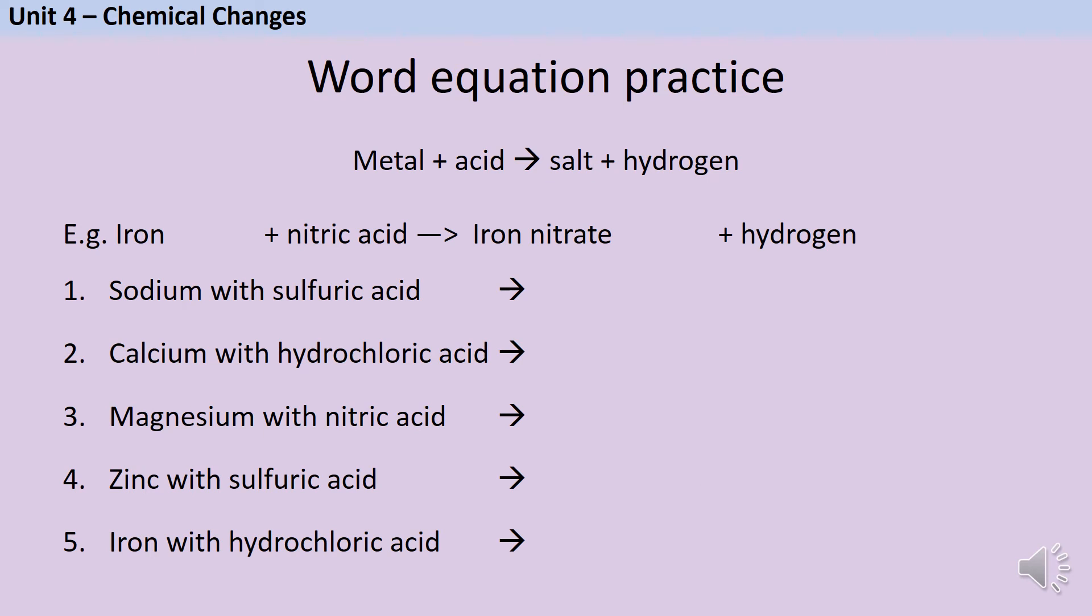Now we can practice writing some word equations. We know that a metal will react with an acid to make a salt and hydrogen. You can remember this using the acronym MASH.